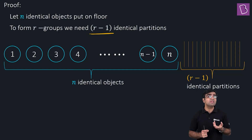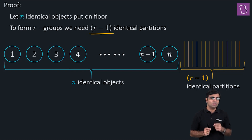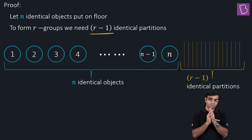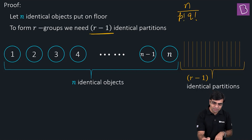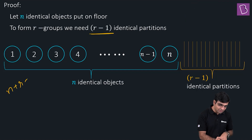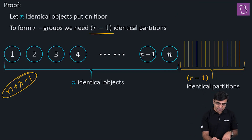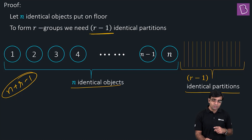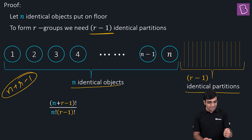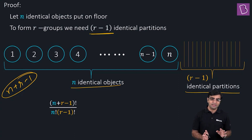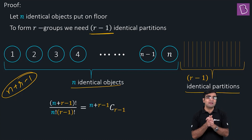The total number of objects to arrange is n + (r−1) = n+r−1. Among these, n are identical objects and r−1 are identical partitions. By the arrangement formula, the number of ways = (n+r−1)! divided by n! times (r−1)!, which equals n+r−1 C r−1. That is the formula for distributing n identical objects into r distinct boxes with zero or more per box.